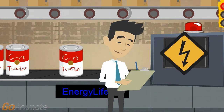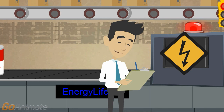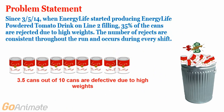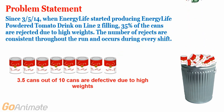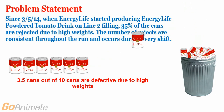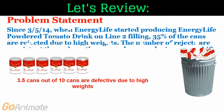Here is Bob at the Gemba. He has just been hired by Energy Life to improve the process capability on Energy Life tomato powder drink mix manufactured on Line 2. Problem Statement: Since 3 May 2014, when Energy Life started producing Energy Life Powdered Tomato Drink on Line 2 filling, 35% of the cans are rejected due to high weights. The number of rejects are consistent throughout the run and occur during every shift; therefore, for every 10 cans produced, approximately 4 cans are rejected for high weights.